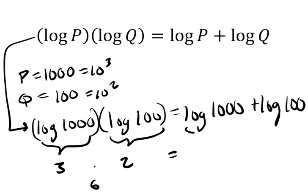On the right-hand side, though, 10 to what power is 1,000? That's 3. Plus 10 squared, so the power is 2, is 5.